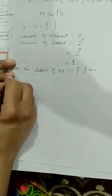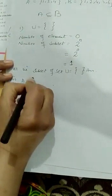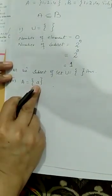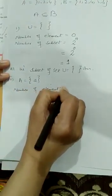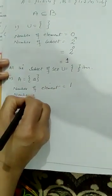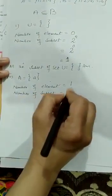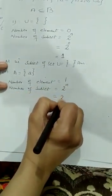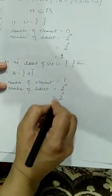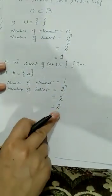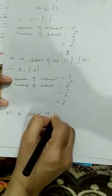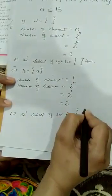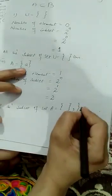For example, if set A is equal to {a}, we have a single element, so number of elements is equal to 1. Number of subsets = 2 power 1 = 2. All the subsets of set A: the 1st subset is always empty, and the 2nd subset is {a} itself. This is your answer for a single-element set.